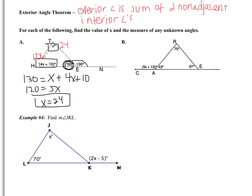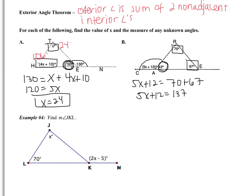The directions ask to find the value of x and the measure of any unknown angles. So substituting back: one angle is 24 degrees and the other is 4(24) + 10 = 106 degrees. For example B: the exterior angle is 5x + 12. The adjacent interior is 43, so the non-adjacent are 70 and 67. Thus 5x + 12 = 137; note this should be 125 after correction. Subtracting 12: 5x = 125, giving x = 25.